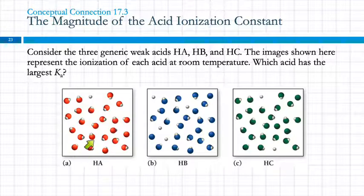So if we look at this one, it looks like only one molecule has ionized. And here we've got four, and here there are two. So it must be B that ionizes more. It has a higher Ka. It's a stronger acid. It's not strong, but it's stronger than the others.